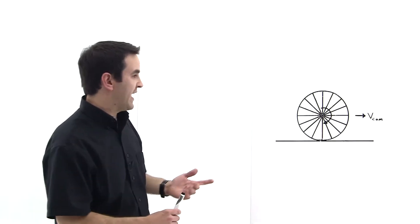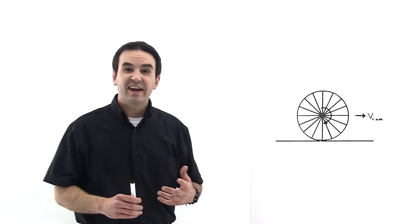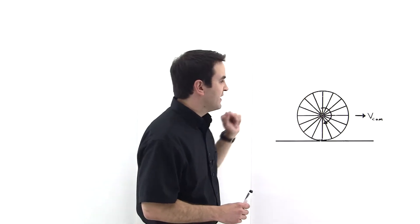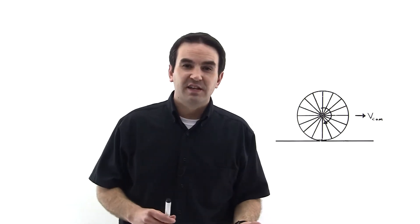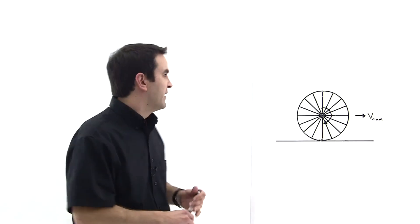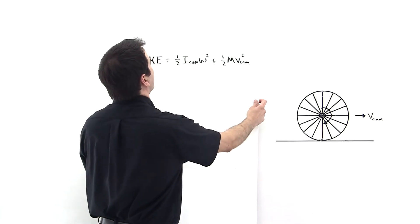This wheel is rolling forward as shown. It has kinetic energy due to its rotation as well as its translation. That may seem sort of obvious, so let's take that as an axiom. The kinetic energy of the wheel is due to two components.